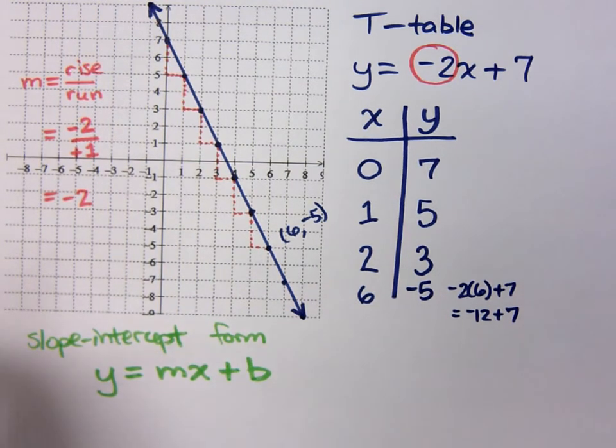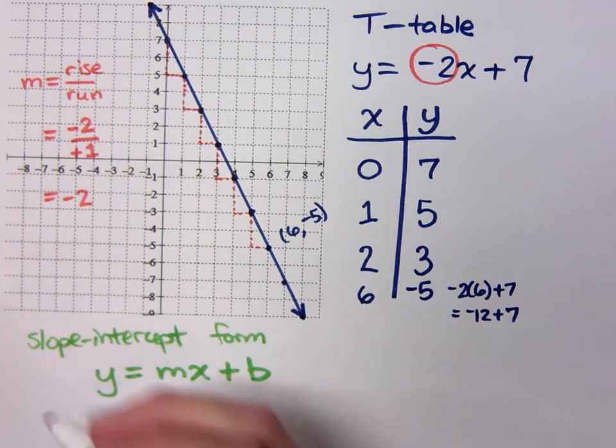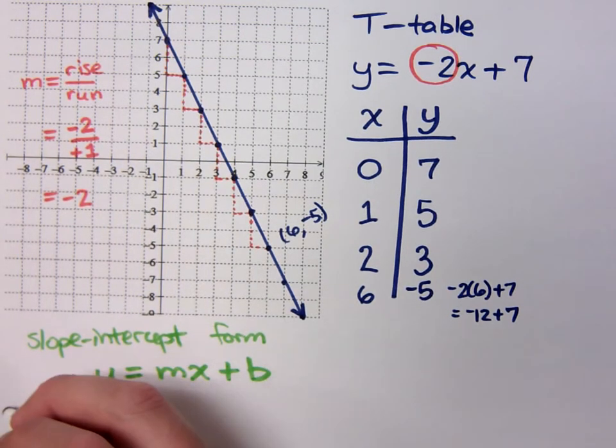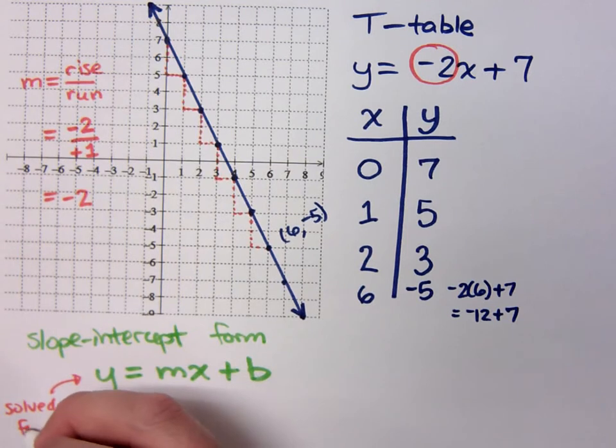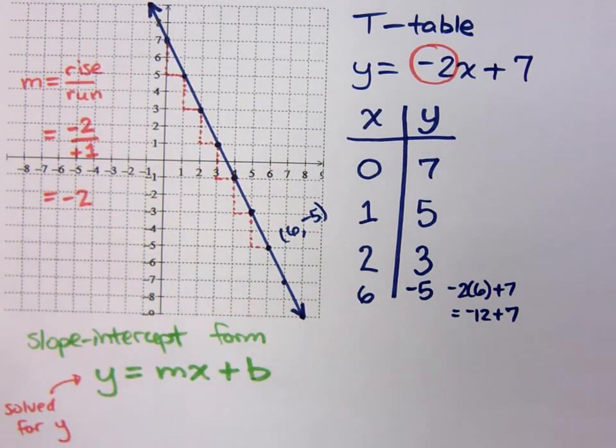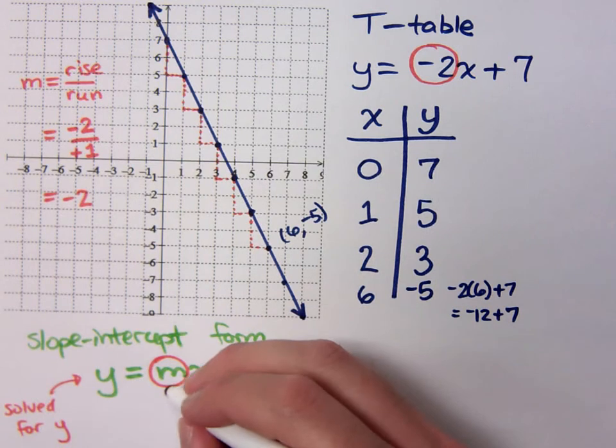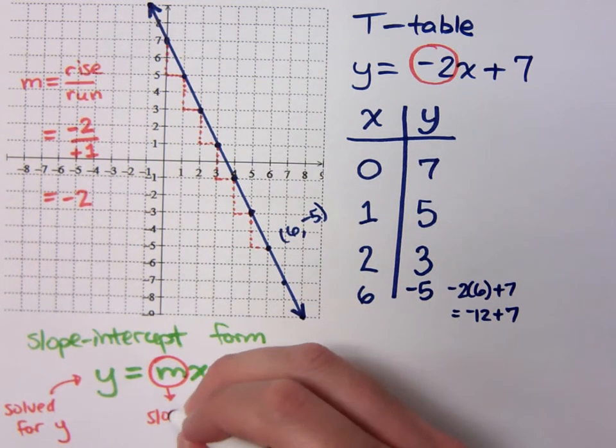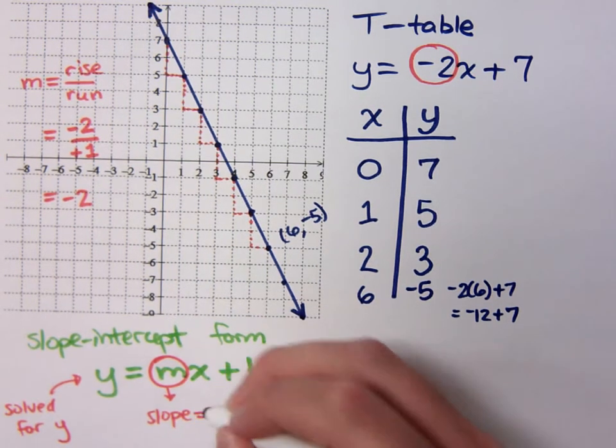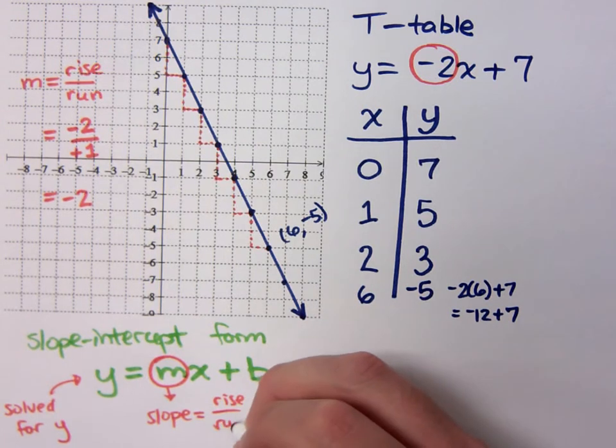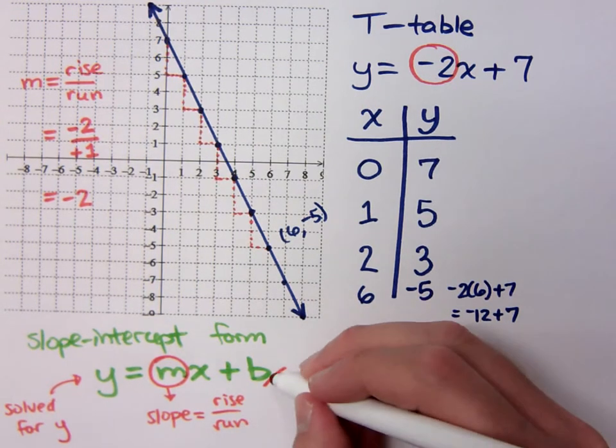And the things that we noted about this is that you have to be solved for y. You have to have y completely by itself. And your m, this coefficient of x, is your slope. And we remember that we look at the slope as being rise over run. That tells you how to move. But what did b mean?